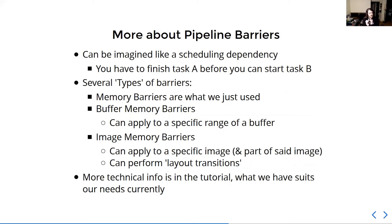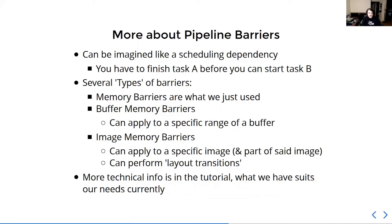There are multiple types of barriers. While there is one pipeline barrier command, it can accept memory barriers, buffer memory barriers — which allow you to specify ranges inside a buffer — and image memory barriers, which not only let you specify which images or parts of an image, but also allow you to transition images from one layout to another. There's also queue ownership transfers, where memory assigned to one queue must be explicitly transferred to be accessible from another queue's command buffers. There's also events, which are different but we don't use them.